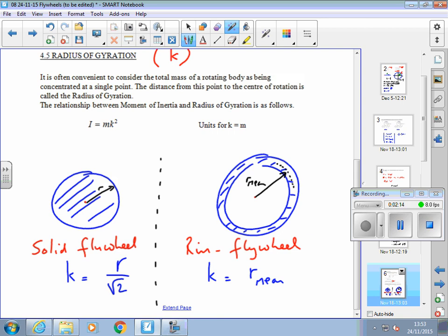Similarly, we can end up with a value for k, the radius of gyration for a rim flywheel, which turns out to be just the mean radius, which is the radius taken in the center of the flywheel here. So two formulas to find this thing called the radius of gyration.